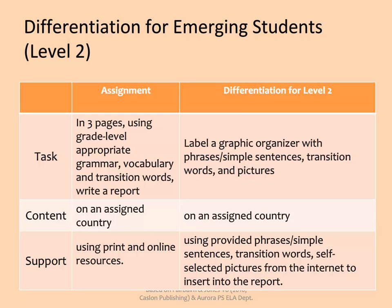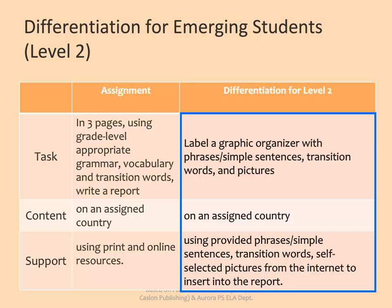The differentiation for students at level 2, emerging, is more substantial. Learners at the emerging level have limited vocabulary in English and are usually speaking only in phrases and simple sentences. In this case, students do not have to produce their own written report, but are provided with a graphic organizer that they have to label with phrases and simple sentences, transition words, and pictures. They are given the phrases, simple sentences, and transition words to choose from, but they have to apply them in the appropriate places on the graphic organizer. They also self-select pictures from the internet to insert into their report on an assigned country.